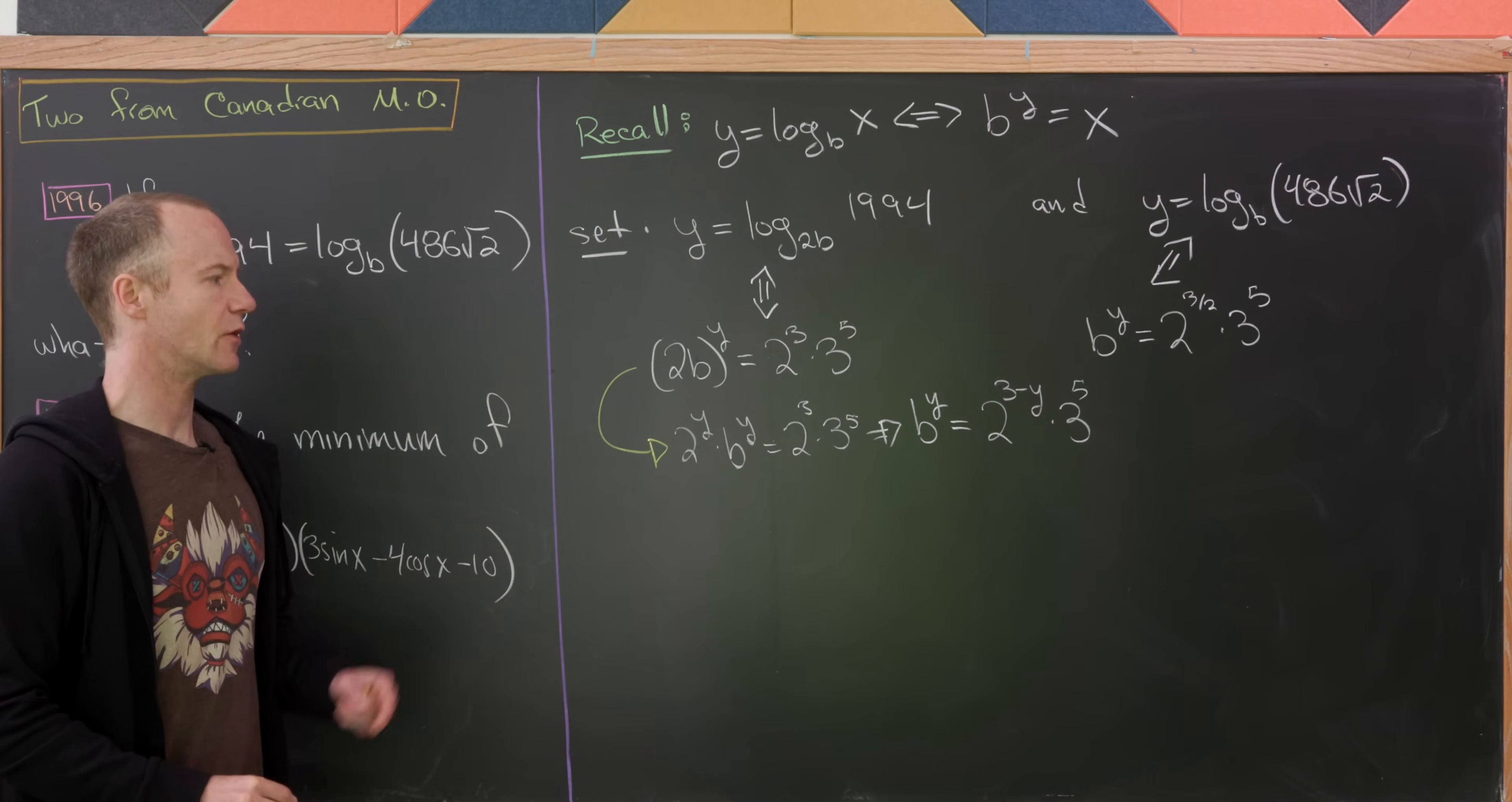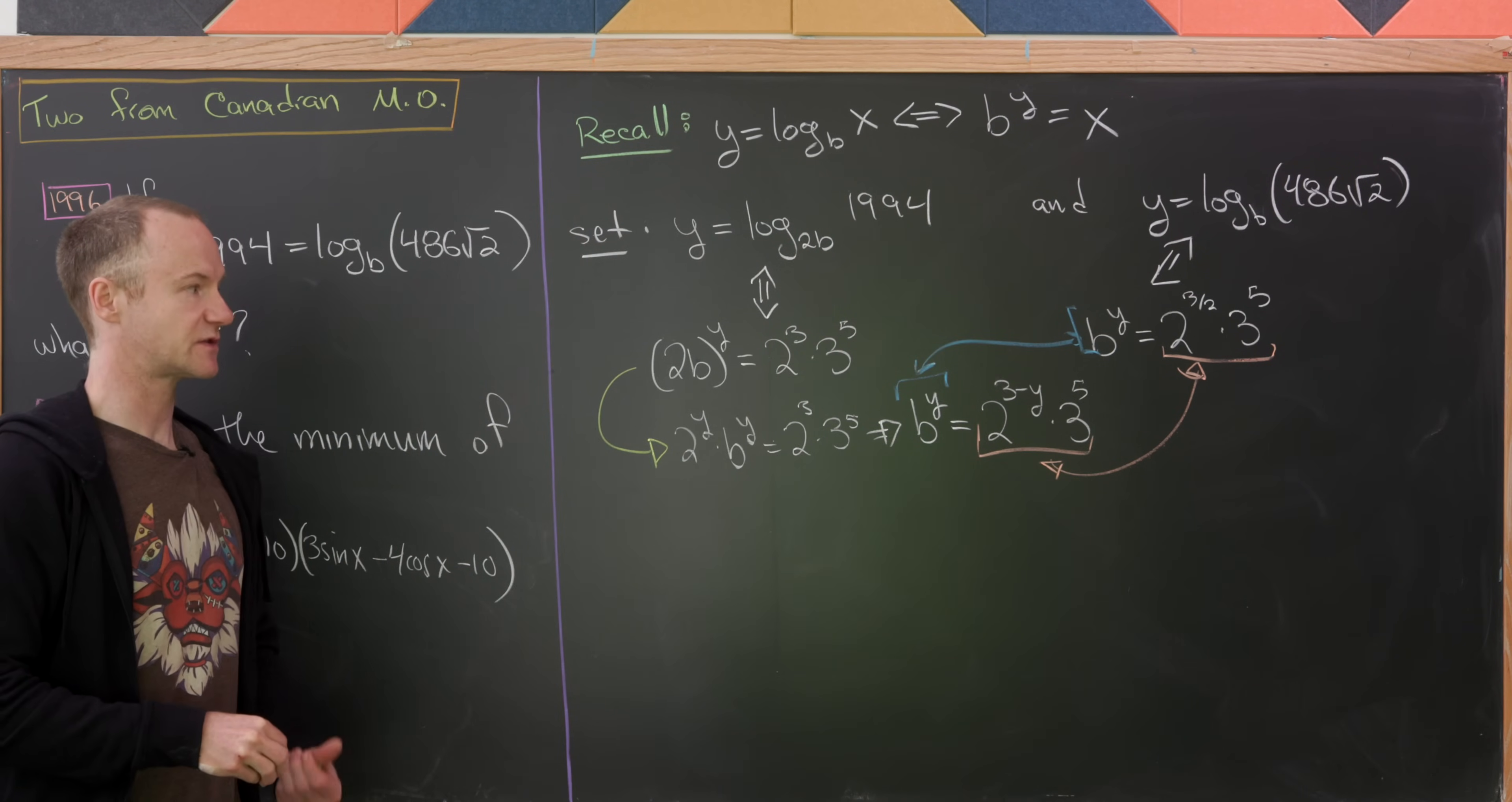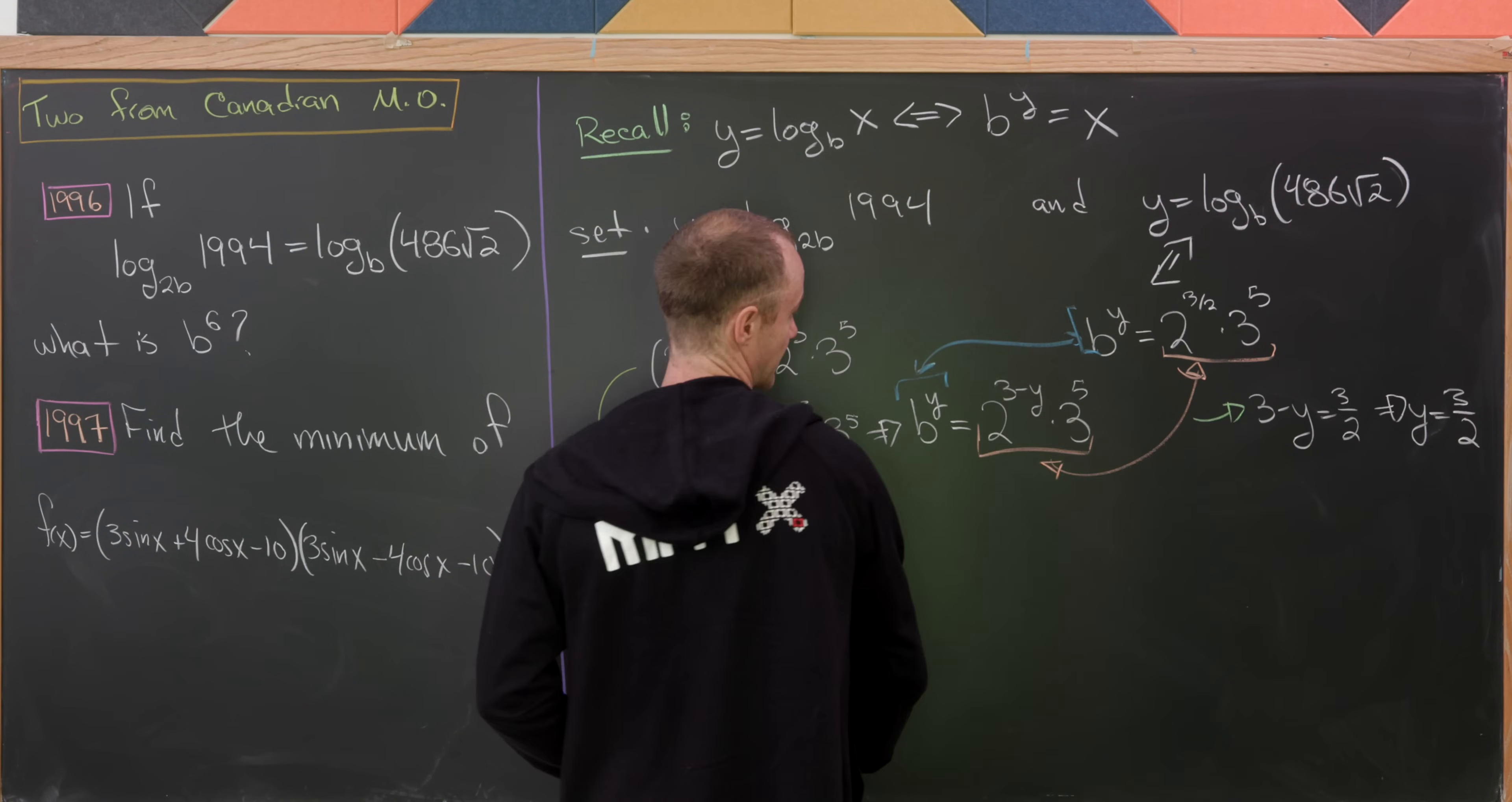But now check it out. We've got two expressions here for b to the y. So that sets up this nice equation that we can hopefully use to solve for our value of y. So we've got 2 to the 3 minus y times 3 to the 5 is 2 to the 3 halves times 3 to the 5. That'll tell us that 3 minus y is equal to 3 halves, which in turn, you can find that y itself is equal to 3 halves.